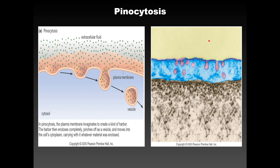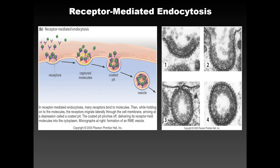Pinocytosis is basically endocytosis but for liquids — it's a cell's way of bringing in liquids. For receptor-mediated endocytosis, you have protein receptors on your cell surface. Molecules that the cell wants to bring in come and bind to each of these receptors, and after binding, the cell starts to form a vesicle and brings them all in. The molecules land on the receptors, the cell recognizes them, and then brings them in.